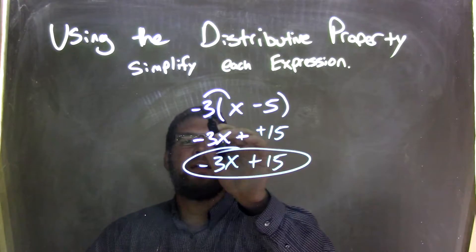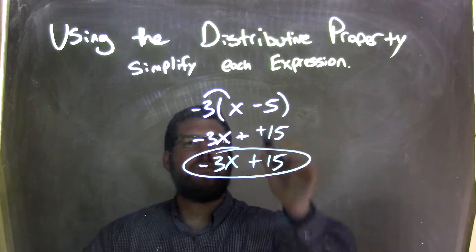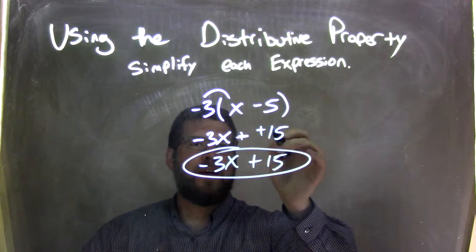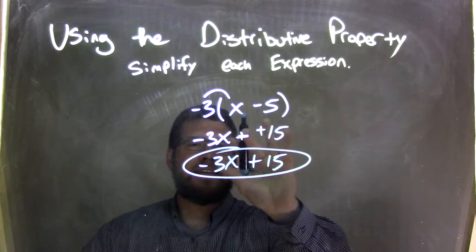So again, let's recap. Negative 3 times x minus 5. Well, the x minus 5, there's nothing we can do. They're not like terms, so we can't simplify that.